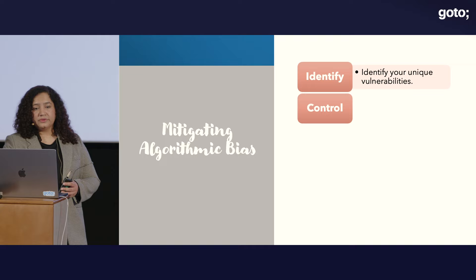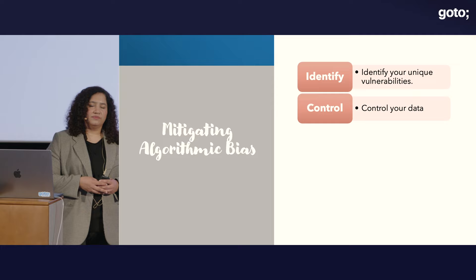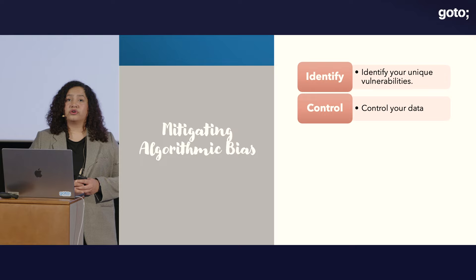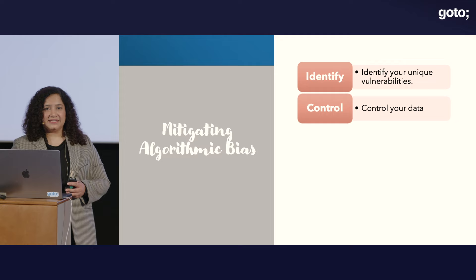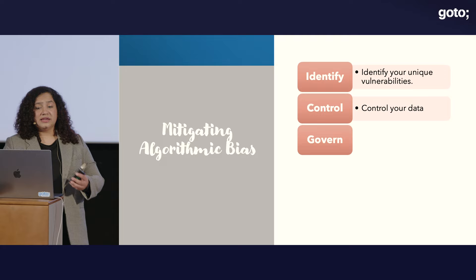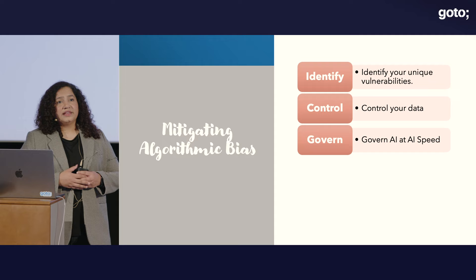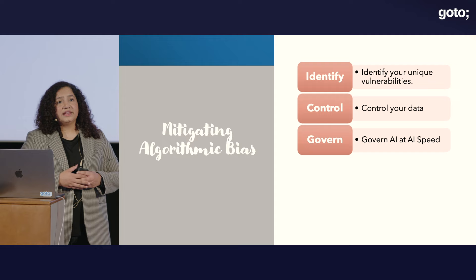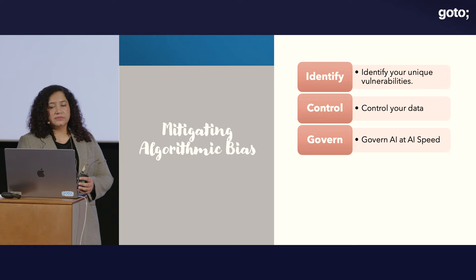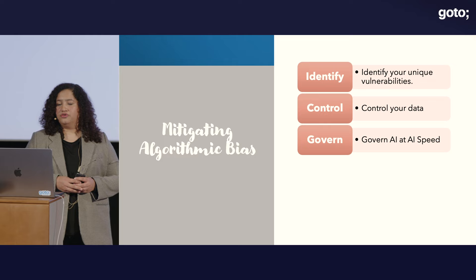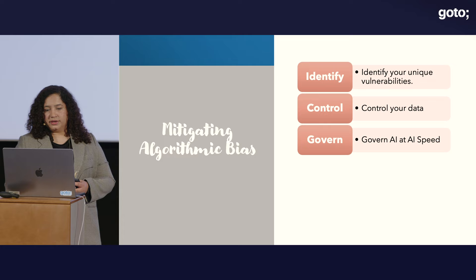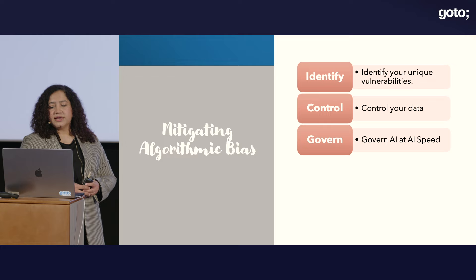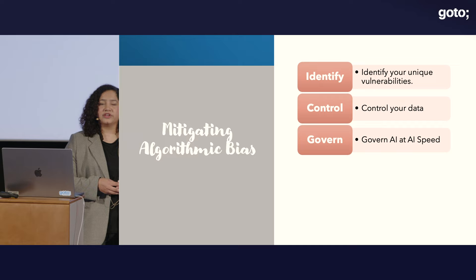The second step is to control your data — data is the key and a main source of bias. Your traditional controls may not be enough, so you need to devise new ways of controlling your data, scrutinize it before feeding it to the algorithm, and make sure it is diverse and correctly rated. Then, govern AI at AI speed — meaning AI is always on and may use data from across the organization, so your governance should keep up with it. It should be continuous and enterprise-wide, including easily understandable frameworks, toolkits, and common definitions and controls so that both AI specialists and business users can keep up.